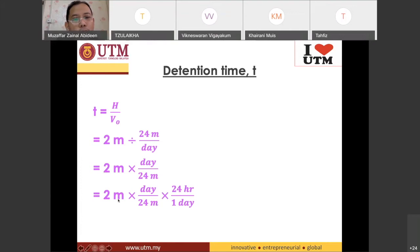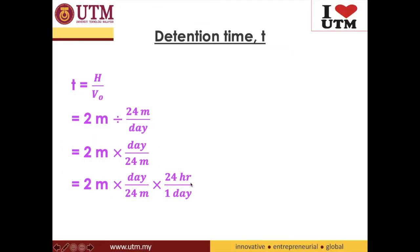So this is the multiplication here is for the conversion units. Meter cancel with this meter. Day cancel with this day. So you end up in hour. So 24 divided by 24 is one. Then two hours. So the result will be two hours.